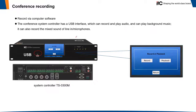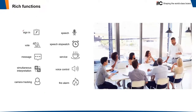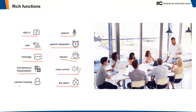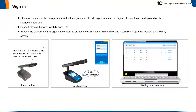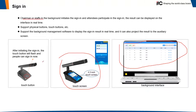For conference recording, it's very simple — use the USB port for recording or playback. We have other functions like signing, speech, vote, speech stopwatch, voice control, message, and service. For the signing function, the chairman or staff can activate it from the background software on PC, or from the microphone with screen to activate signing or voting. After it's initiated, the delegator can use the button to check in — that's how we realize signing. For conference speech, you can control a 10-band EQ adjustment for the microphones from the background. Audio can be adjusted according to the voice characteristics of different speakers to realize perfect sound quality. The voting function works the same way as signing.